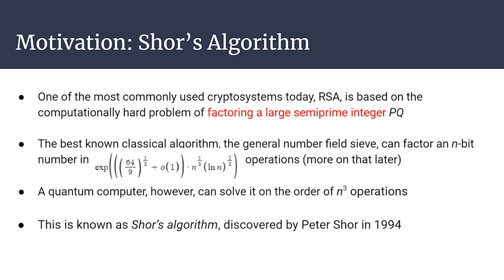Using a classical computer, the best algorithmic complexity we can achieve is the general number field sieve, which factors an n-bit number in sub-exponential time. In comparison, a quantum computer can solve it on the order of n³ operations. n³ is fast enough that we can realistically solve this — if we had a functioning quantum computer capable of handling large enough numbers, we would be able to factor that number fast enough to break RSA cryptography.